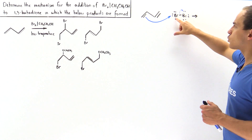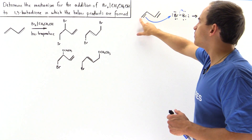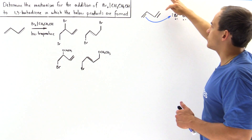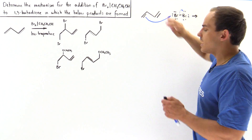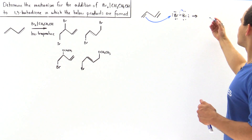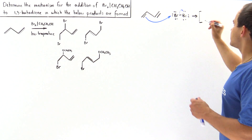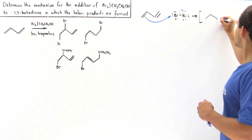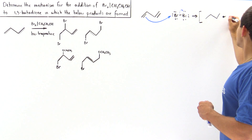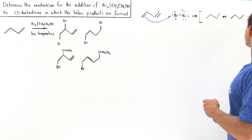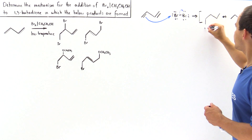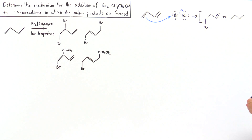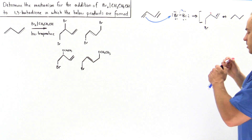As long as the bromine goes on the first carbon, we form a resonance-stabilized structure. That's exactly why the bromine will not go on this carbon — because that will not form a resonance-stabilized intermediate molecule. Let's draw our intermediate. This bromine goes right here, we have a double bond here, and we have a positive charge on this carbon.